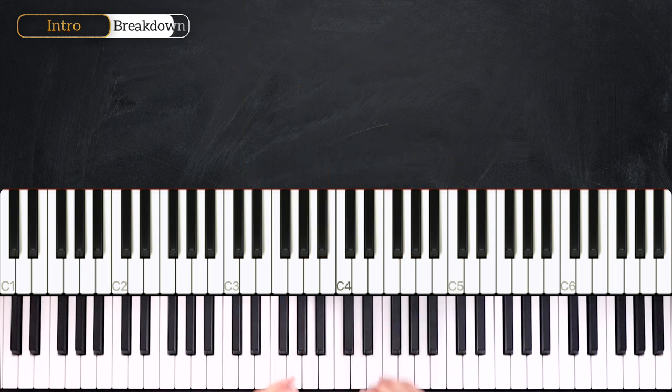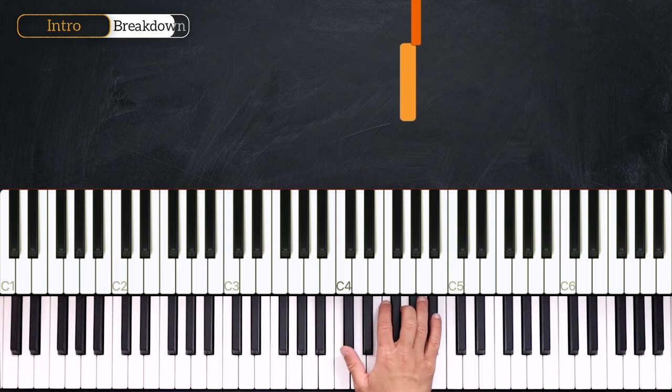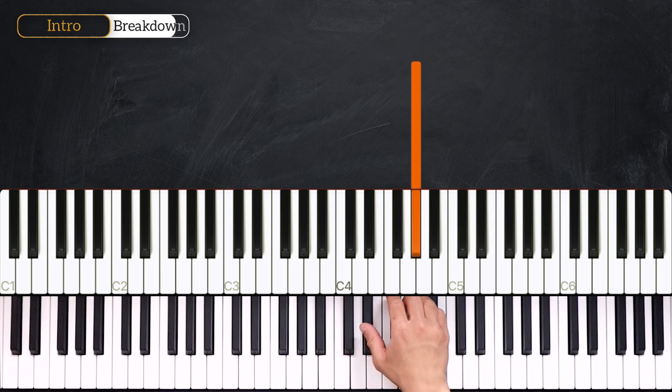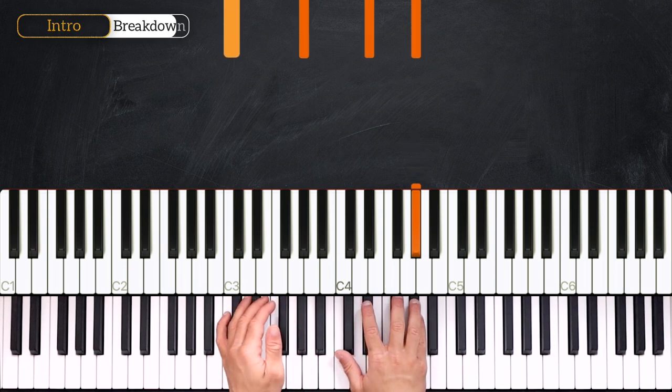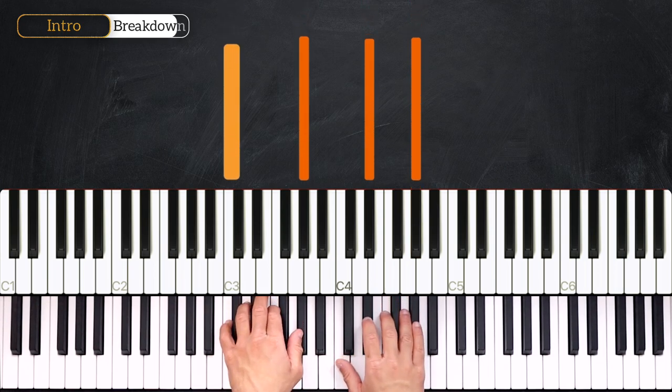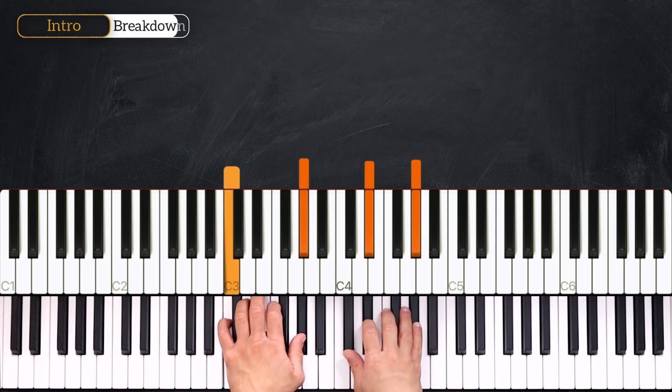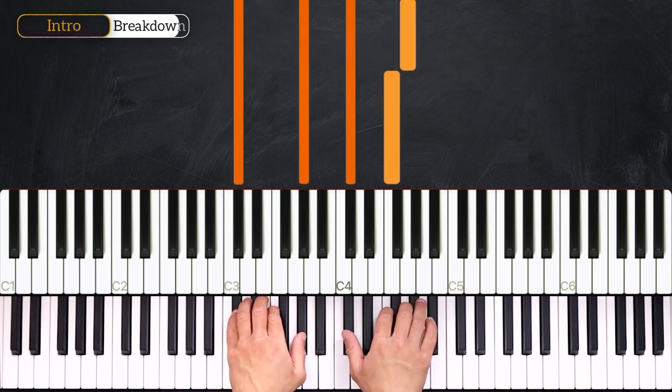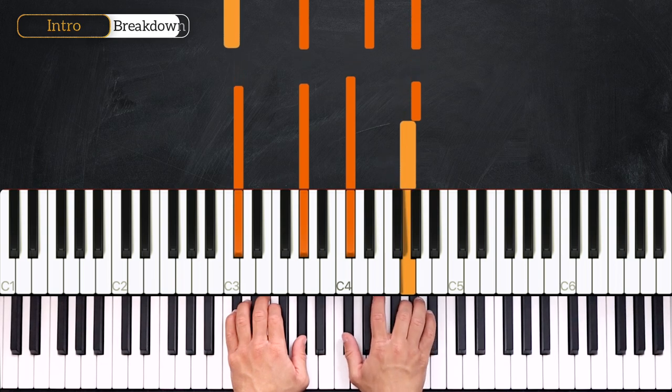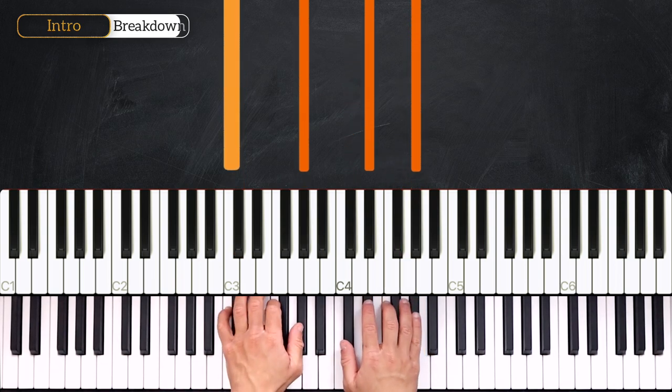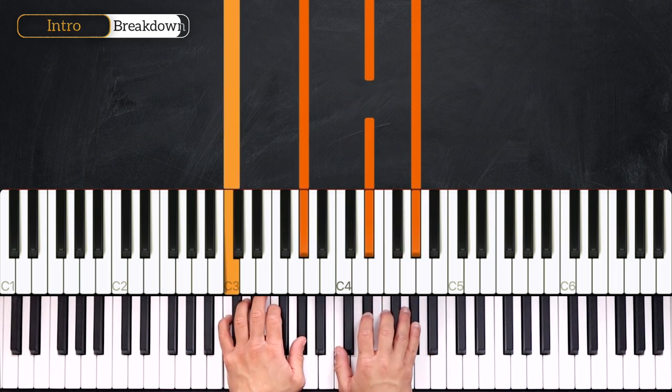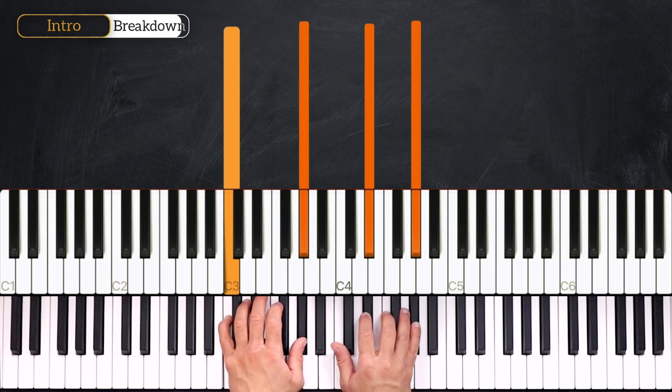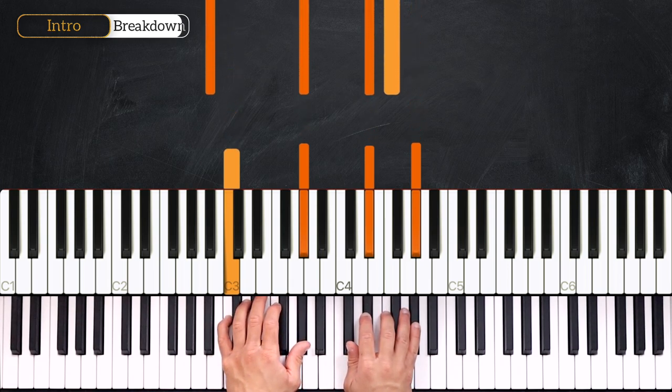From here we'll play melody on the right hand: G, Ab into the next chord which is Ab over C. So we are on the Db major. We play G, A into Ab over C. Here we'll just play Eb on the right hand into the next chord.